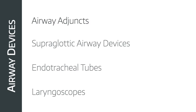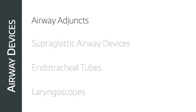Then we'll look at supraglottic devices — these are great for many types of elective surgery but also have a role in the emergency setting as a temporizing measure. Finally, we'll look at endotracheal tubes and laryngoscopes. The only definitive airway is an endotracheal tube with a cuff inflated below the level of the vocal cords, but there are loads of types of tubes and quite a few different ways of getting them in.